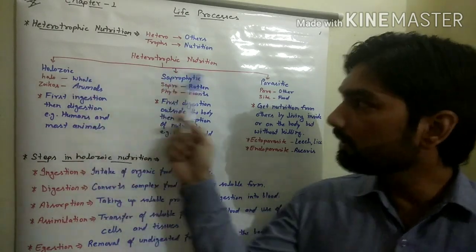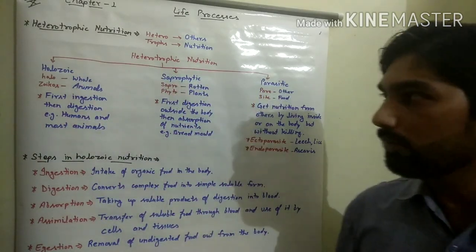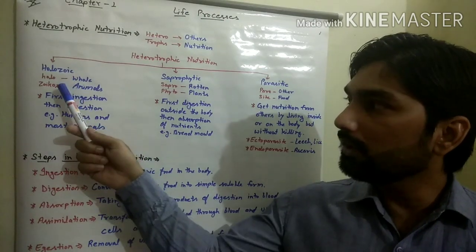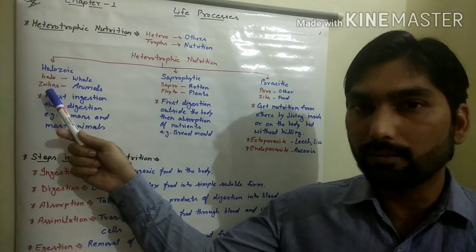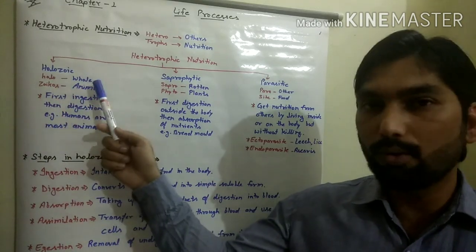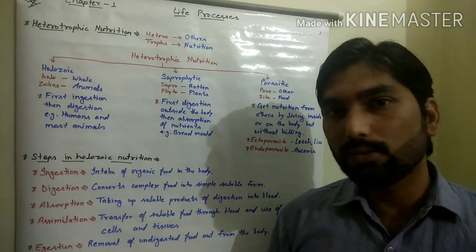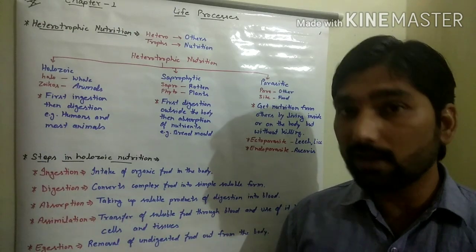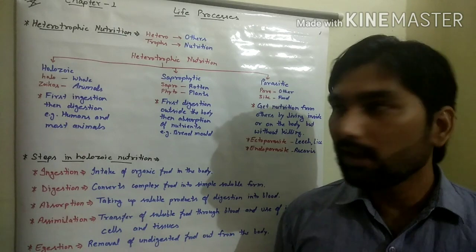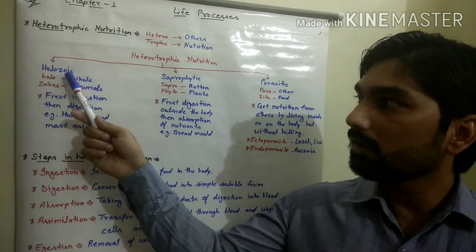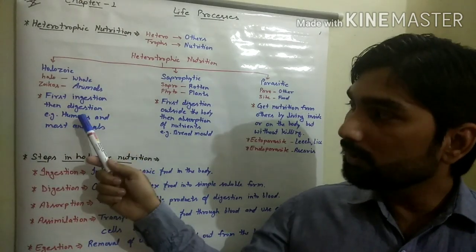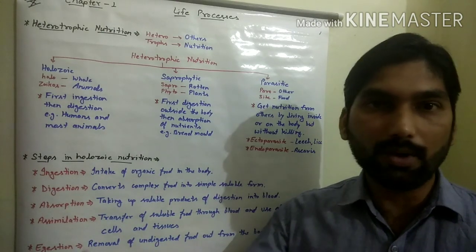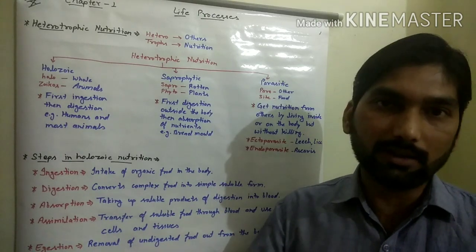On the basis of food-obtaining methods, heterotrophic nutrition is classified into three groups: holozoic, saprophytic, and parasitic. The first is holozoic nutrition. The word comes from Greek — 'holo' means whole and 'zoikos' means animals. Organisms that ingest food from the external environment into their body and then digest and absorb the nutrients represent holozoic nutrition. Examples are humans and most surrounding animals.